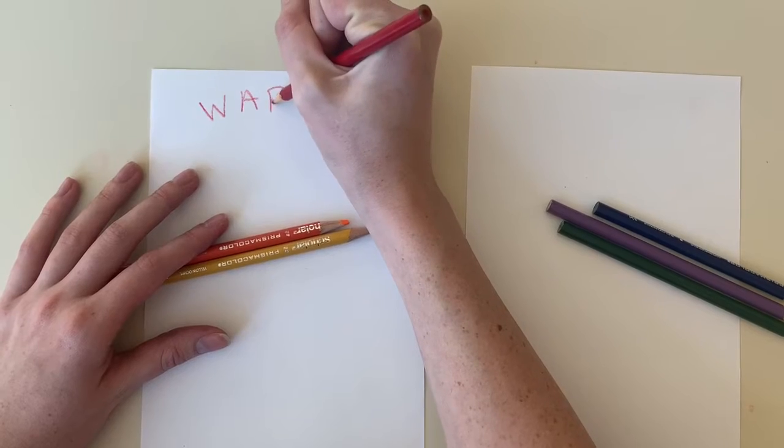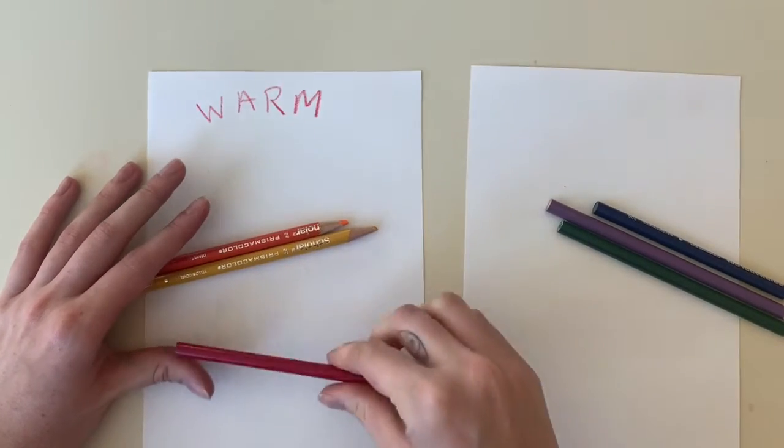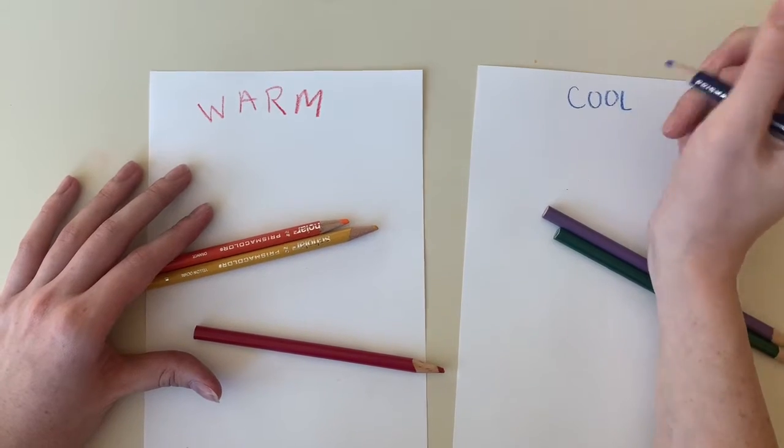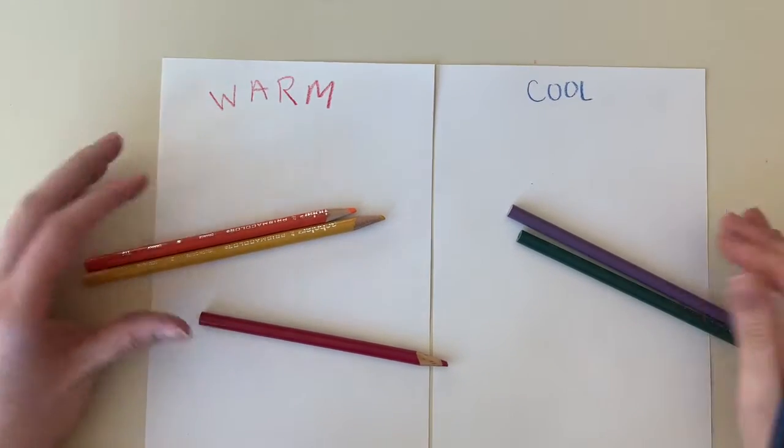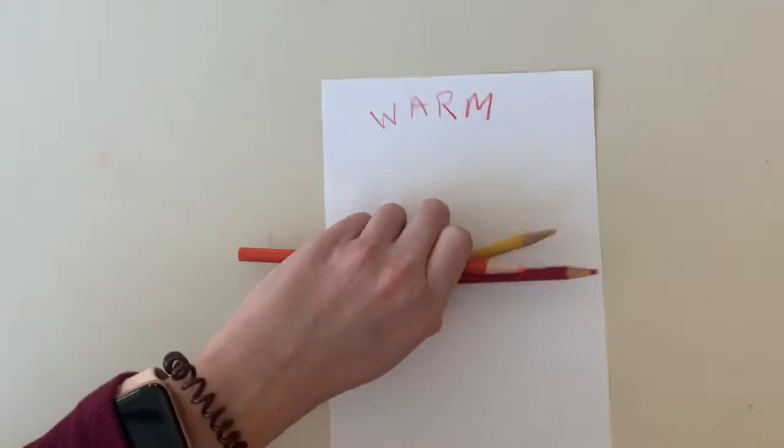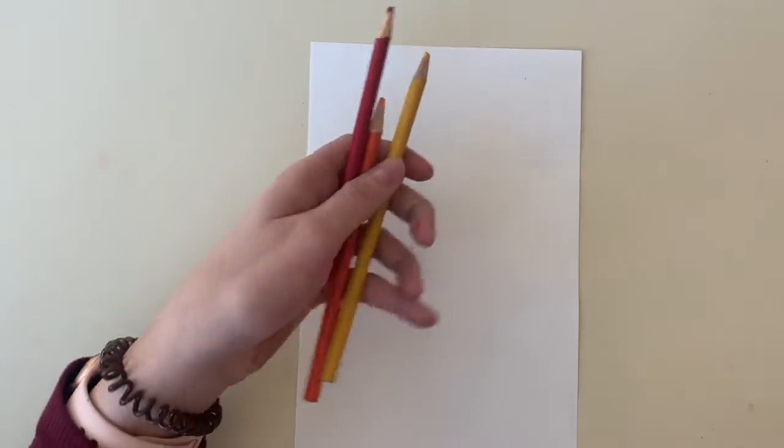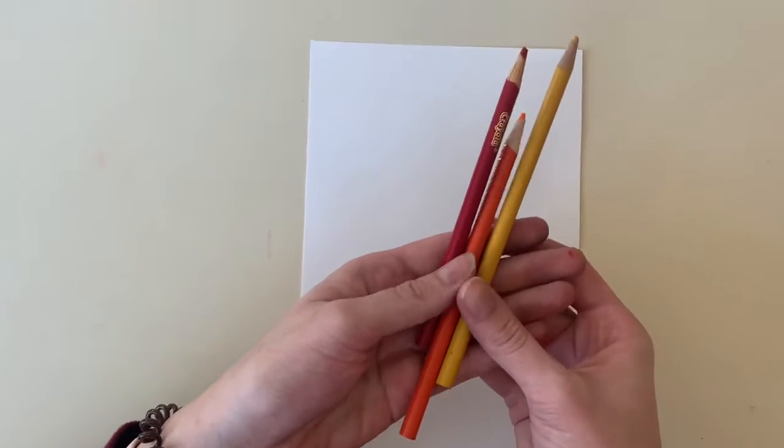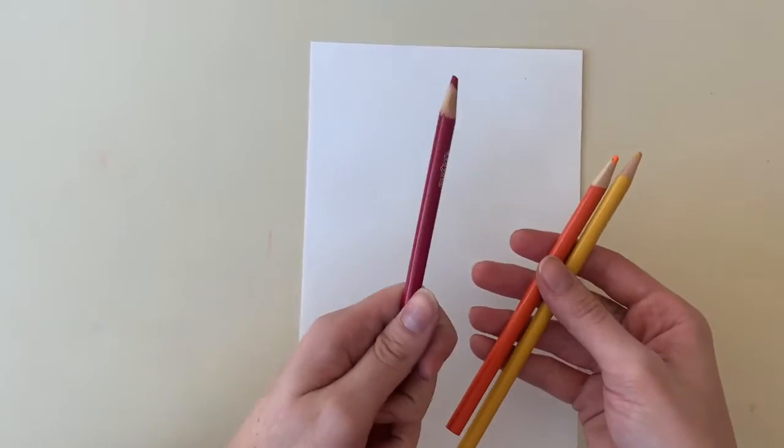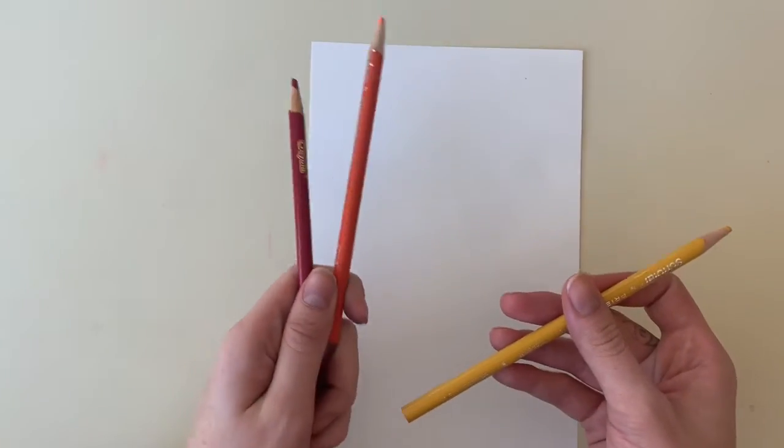So what are warm colors? Warm colors are red, orange, and yellow. I like to think of the sun, the hot weather. Usually the first colors that come to mind are these red tones, yellows, and oranges. So what I'm going to do is fill in my entire page with warm colors.